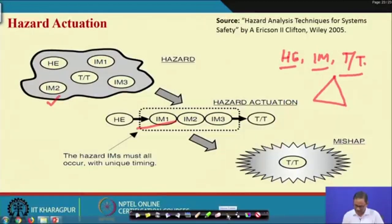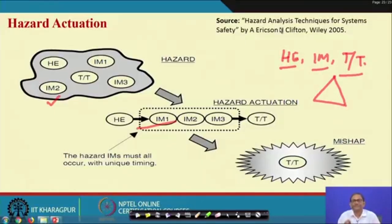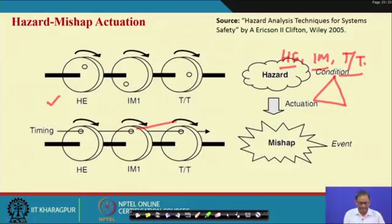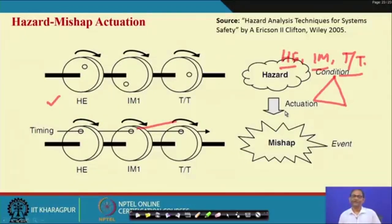It is the job of the safety engineer to understand this and do the needful. This is discussed in the book written by Clifton Erickson — the name of the book is 'Hazard Analysis Techniques for System Safety,' a very important book. The graphical representation shows these three components of hazards in the top figure — all those loopholes but they are not aligned, this is the hazard state. When they are aligned, timing is very important — at a particular time all those things align and it leads to an accident. This is hazard actuation.